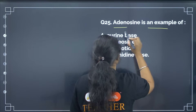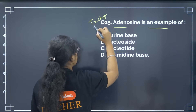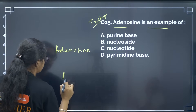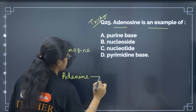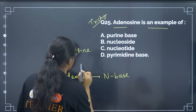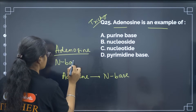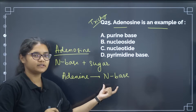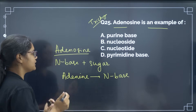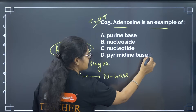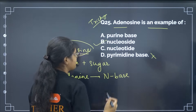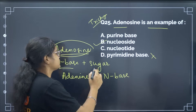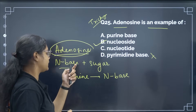Adenosine is an example of what? There is a distinction between adenosine and adenine. Adenine is a nitrogenous base. Adenosine is nitrogenous base plus the sugar group — so it is a nucleoside. Similarly, guanine gives guanosine. When we have the sugar and the base together we call it a nucleoside. So adenosine is a nucleoside — correct answer is option number B.